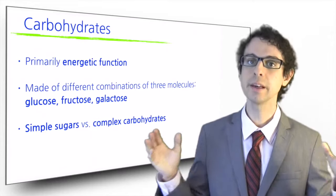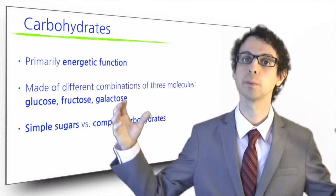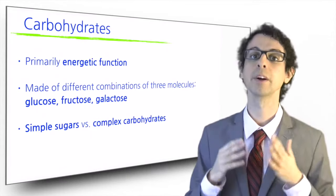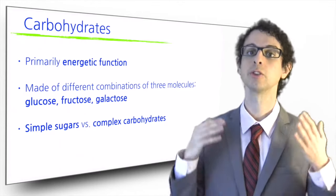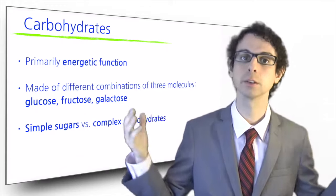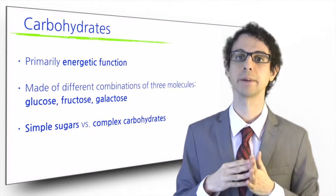On the other hand, if many of them are combined together to form long chains, we call them complex carbohydrates, such as starch or glycogen, which are long chains of many molecules of glucose linked together with chemical bonds.